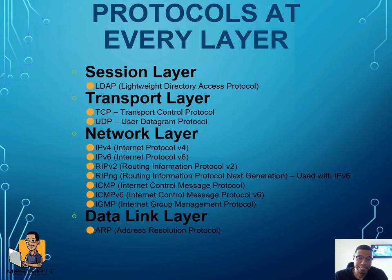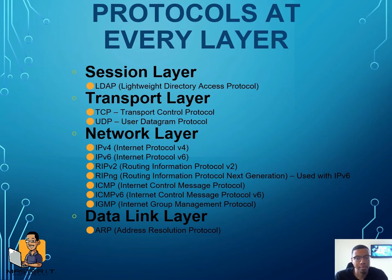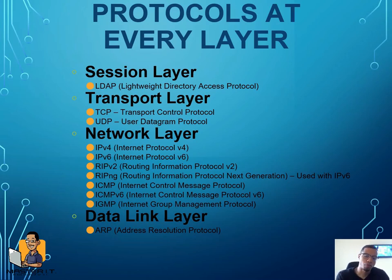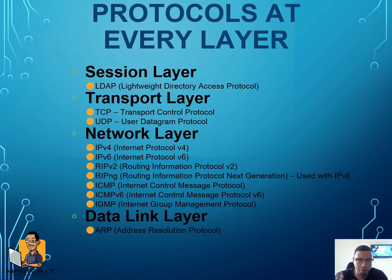Layer three is the network layer. The main purpose of the network layer is IP addressing. There's one really important device that works there: a router. Routers work at layer three and use IP addresses to forward information. We have IPv4 and IPv6 — that's IP addressing. We've run out of IPv4 addresses, so now we're moving to IPv6, which provides more addresses. But the main thing: layer three is the network layer, and the device that works there is a router. Another name for a router is a gateway.